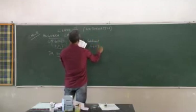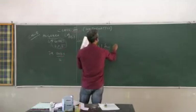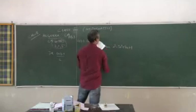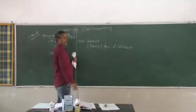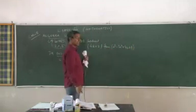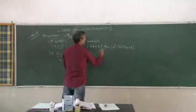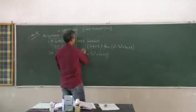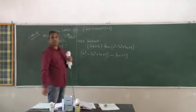Subtract 6a plus 3 from a cube minus 3a square plus 4a plus 1. Now be careful with this question. Whenever you see questions like this, he is saying subtract this value from that value. That means you must put this value first. a³ - 3a² + 4a + 1 minus 6a plus 3. Please have good practice of such questions.